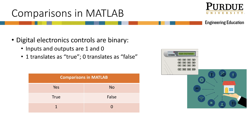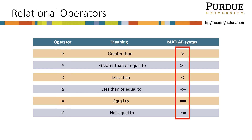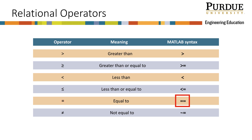The clock setting will be controlled using relational operators. The relational operators on the left side of this table should be familiar from your previous experience. The MATLAB syntax for each is shown on the right side. A few things to note: the equal to operator is represented with two equal signs. This is different from the single equal sign in MATLAB, which assigns the right value to the variable on the left. The double equal sign is the relational operator and compares the values on each side to see if they are equal.